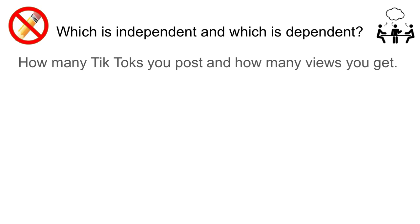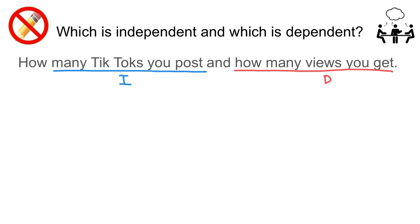How many TikToks you post and how many views you get. We ask: does how many TikToks you post depend on how many views you get, or does how many views you get depend on how many TikToks you post? The second makes more sense, so how many views you get is the dependent quantity and how many TikToks you post is the independent quantity. One way to think about this: you need to do the independent quantity before you get the dependent quantity. You have to post a TikTok before you get the views, and Archer has to drool before he uses the bibs. The dependent quantity comes after the independent quantity.